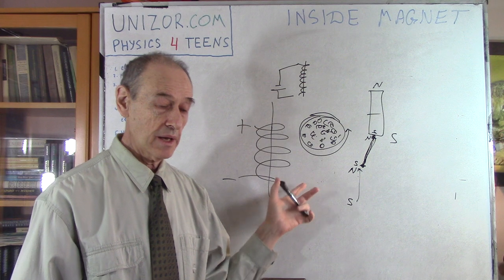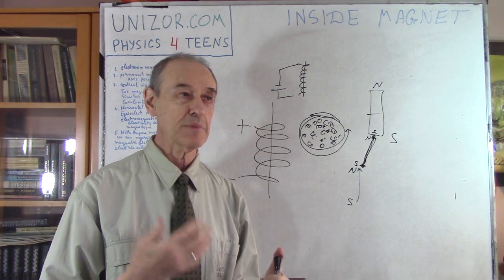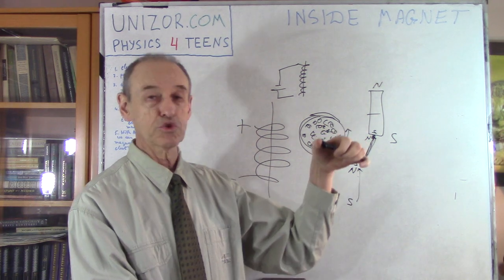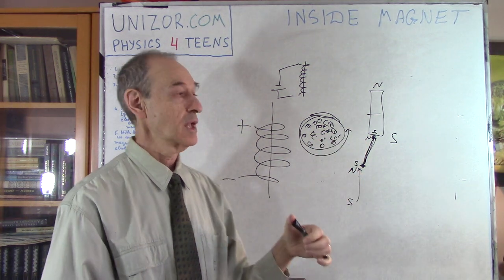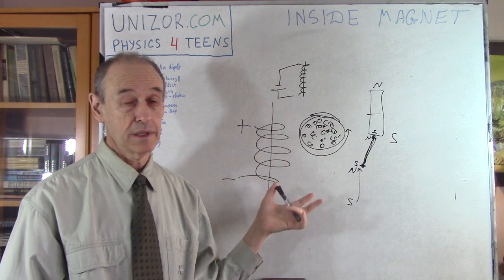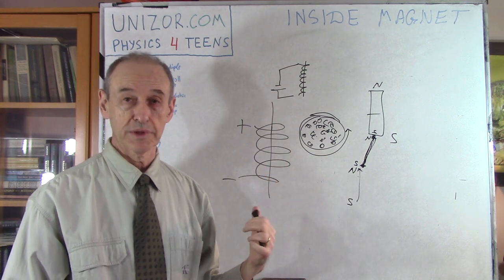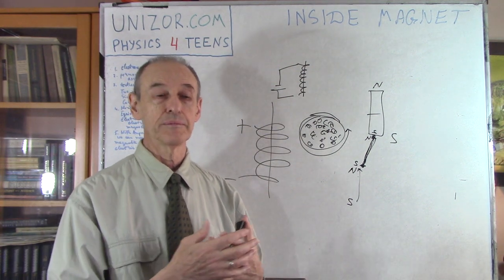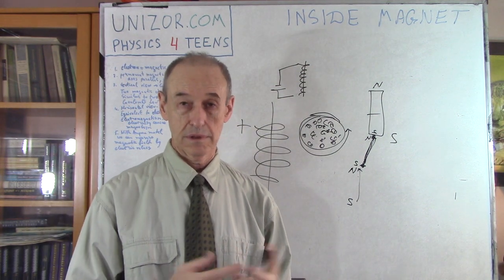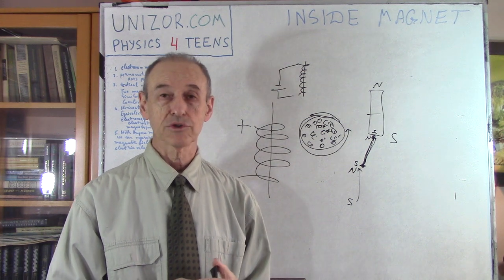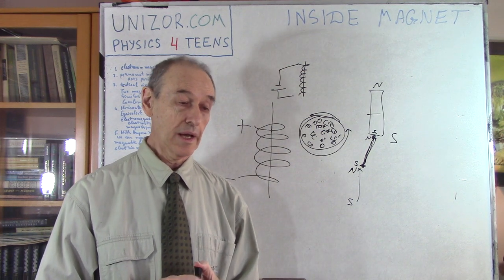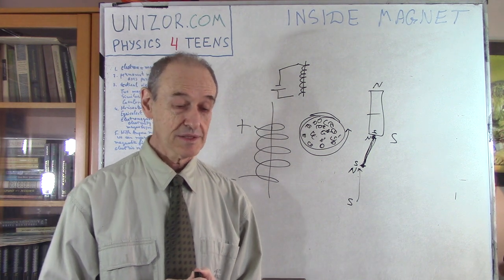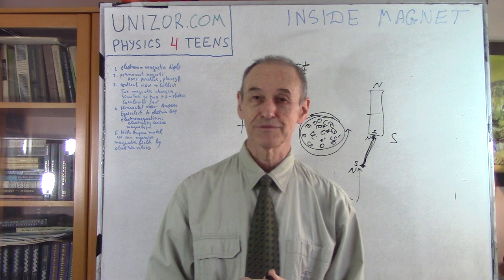Ampere's model plays a much more important role than Gilbert's model of two magnetic charges on two poles, because it has many practical implications. Obviously, lots of electromagnets are used in our economy — electromagnetism is everywhere — and that's something we will talk about at some other time. Thanks very much, and that's it for today. Good luck.